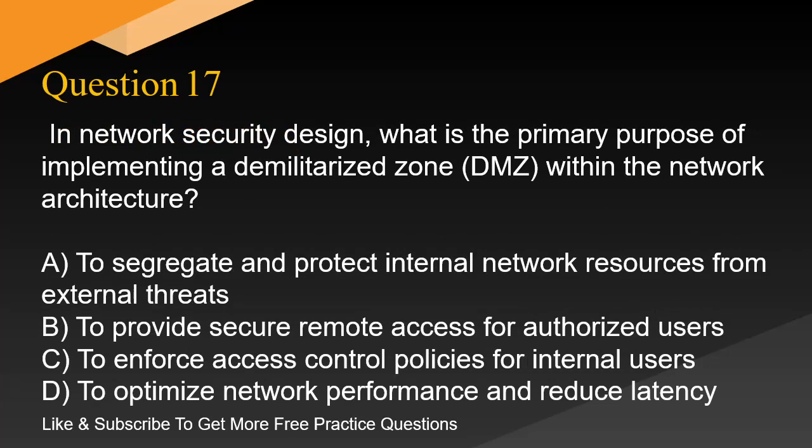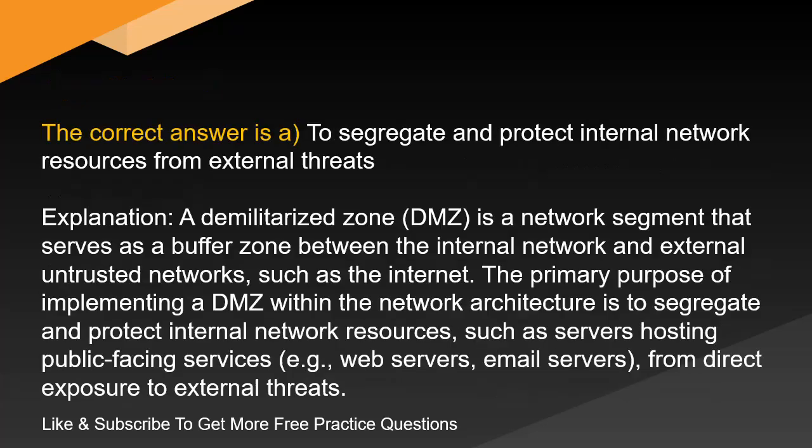Question 17. In network security design, what is the primary purpose of implementing a demilitarized zone, DMZ, within the network architecture? The correct answer is A: to segregate and protect internal network resources from external threats. A demilitarized zone, DMZ, is a network segment that serves as a buffer zone between the internal network and external untrusted networks, such as the Internet. The primary purpose of implementing a DMZ is to segregate and protect internal network resources, such as servers hosting public-facing services like web servers and email servers, from direct exposure to external threats.